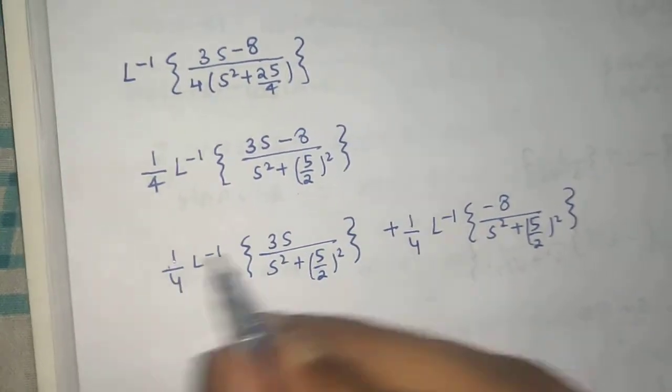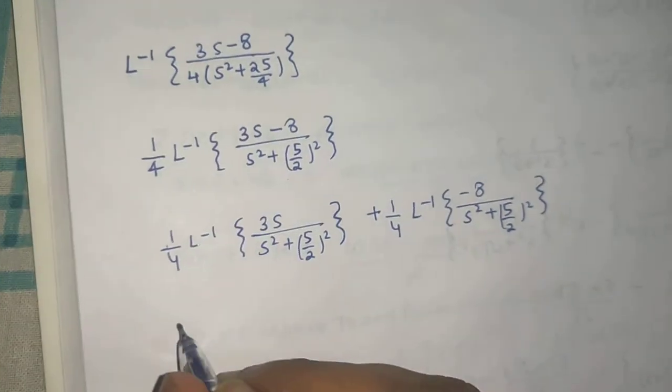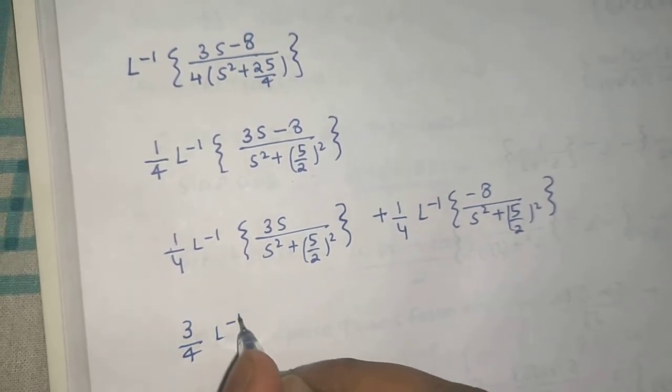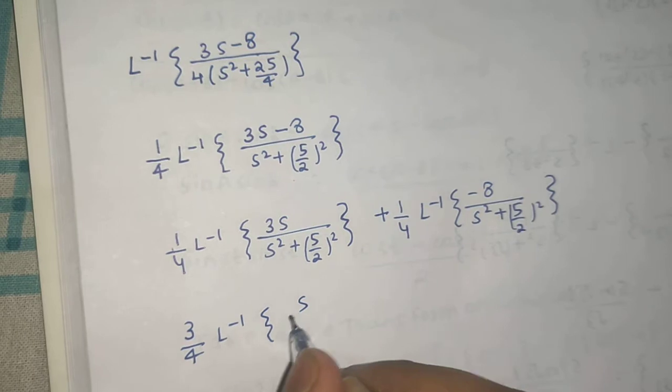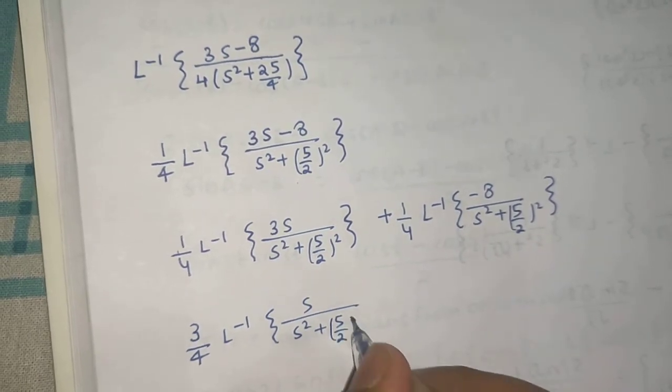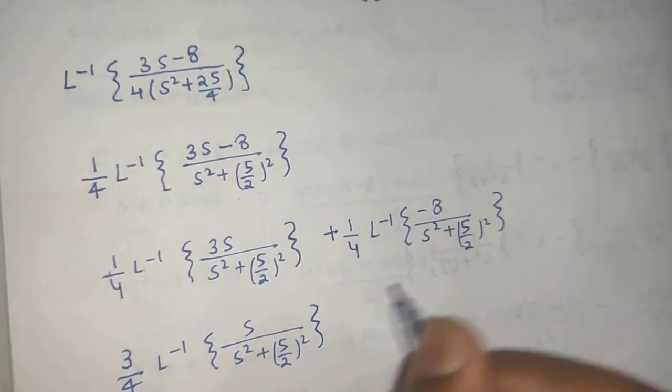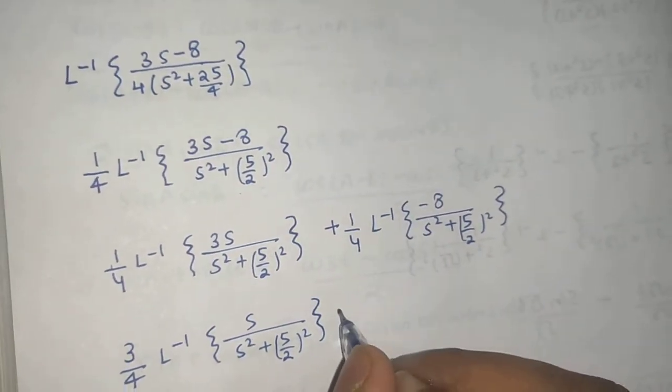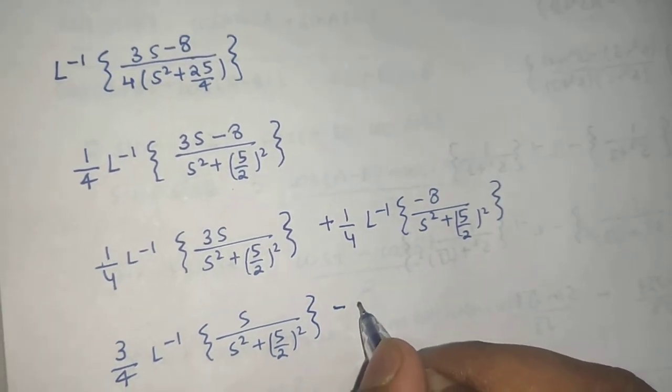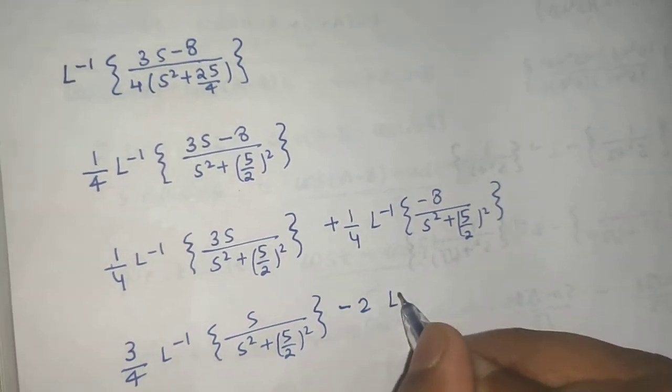This 3 can come out. Laplace inverse of S divided by S square plus 5 by 2 whole square. And this will come out so we will get minus 8 by 4, that means minus 2, Laplace inverse of 1 divided by S square plus 5 by 2 whole square.